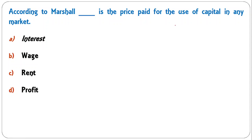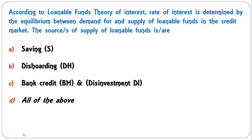According to Marshall, dash is the price paid for the use of capital in any market. Interest is the price paid for the use of capital in any market, as defined by Marshall. A is the correct answer.